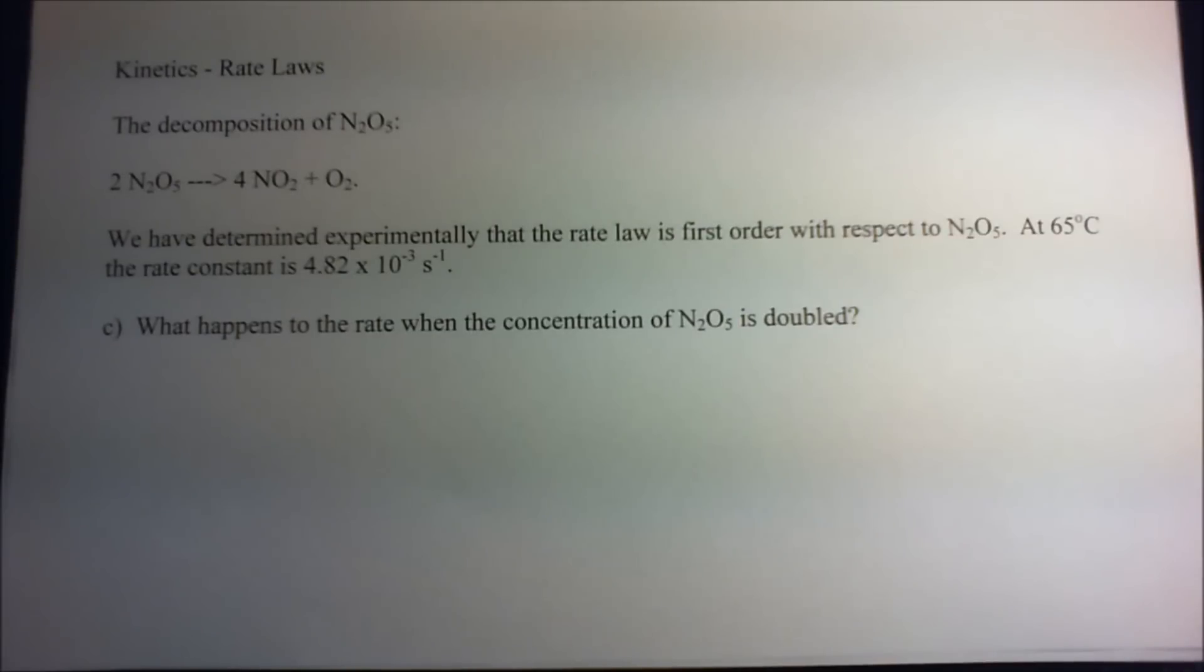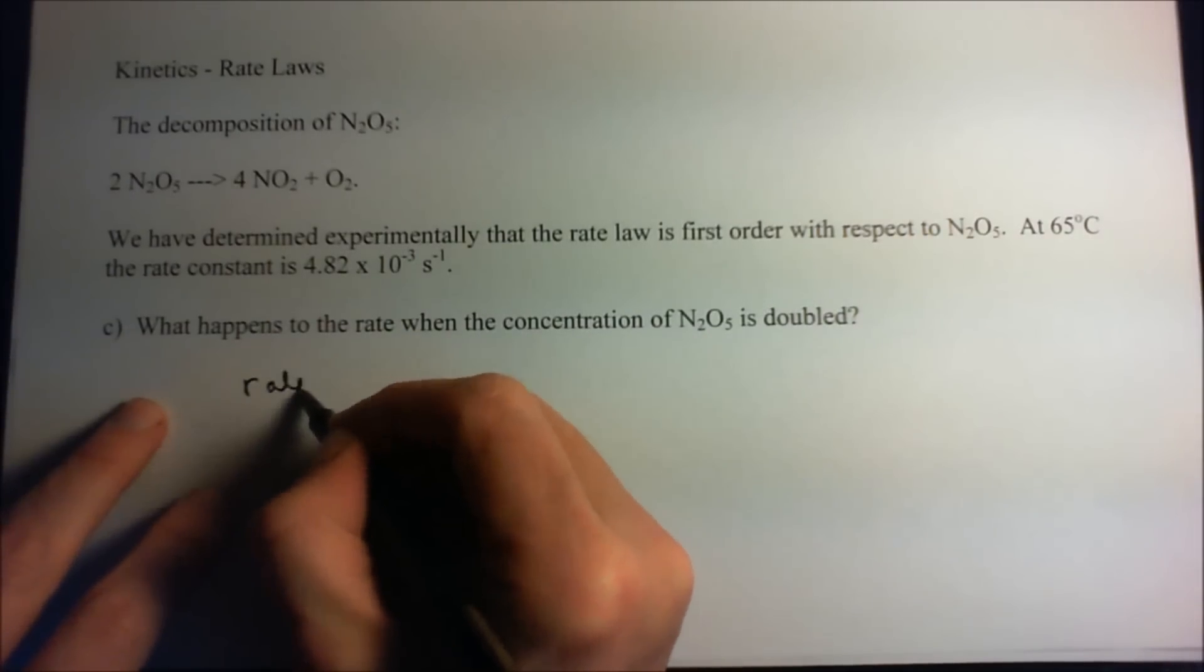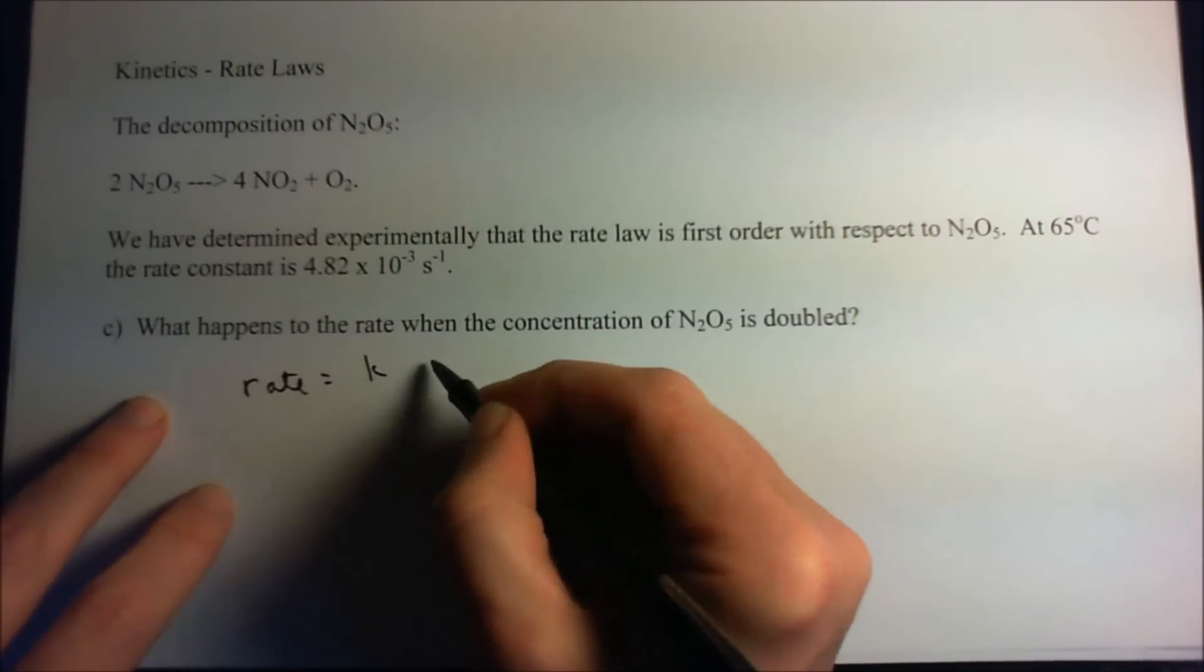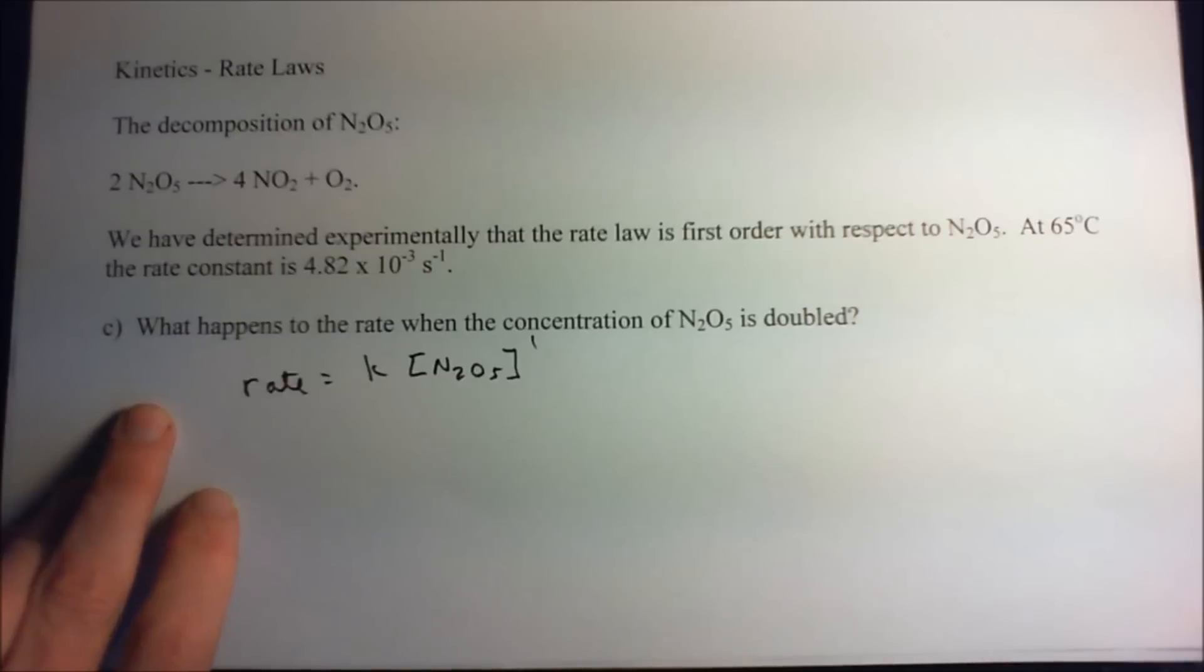Now question C asks, well what happens to the rate when the concentration of N2O5 is doubled? Well we don't even need the numbers here. All we really need to realize is that the rate is the rate constant times N2O5, the concentration to some first power.